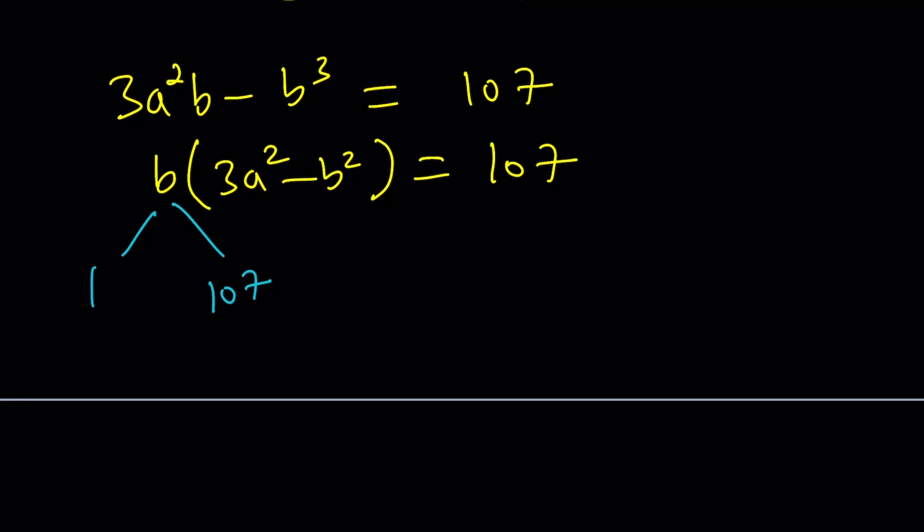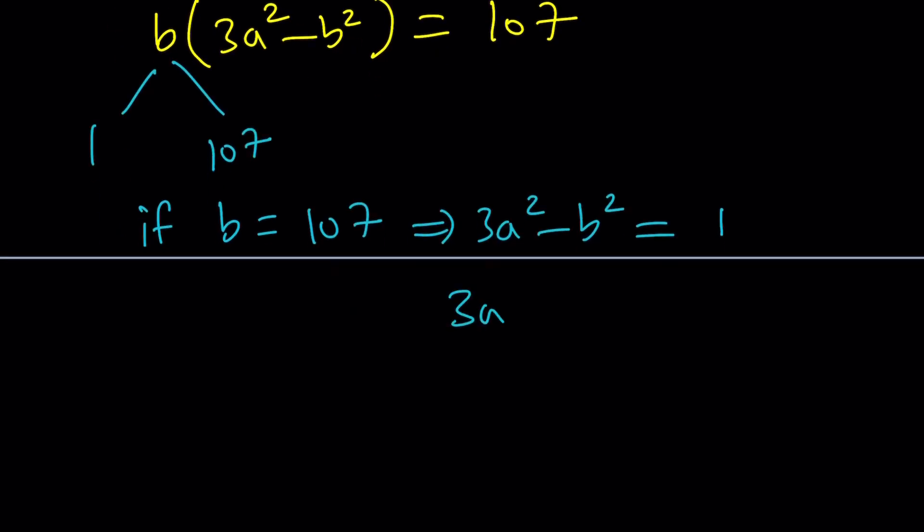If B is 107, so that's a larger number, let's start with that. Then we get 3A squared minus B squared equals 1. Because 107 times 1, think about it, is 107. But we already know B, so let's go ahead and plug it in. 3A squared minus 107 squared equals 1. And 3A squared. Now, 107 squared is going to be 11,449. If you add to 1, you're going to get 11,450. Well, guess what?